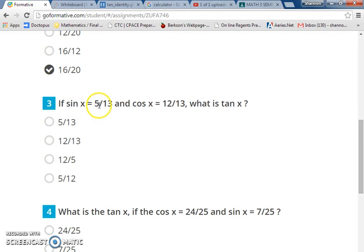For number 3, sine of x is 5/13, cosine of x is 12/13. What's the tangent? I'm going to take the numerator of sine and the numerator of cosine and I'll put them over each other, 5 over 12, and that will give me my tangent. Because we just discussed in the last two problems how those denominators are going to cancel away.